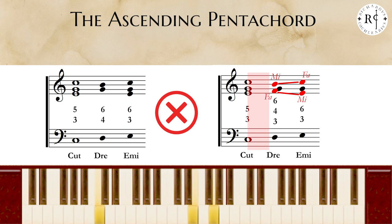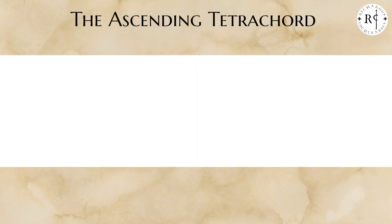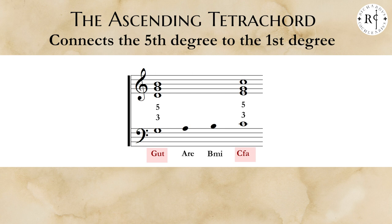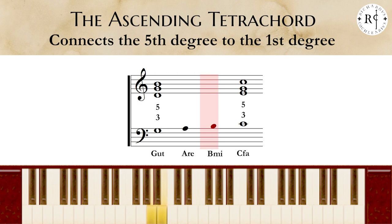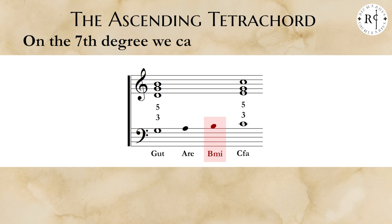The ascending tetrachord connects the fifth degree to the first one, from G ut to Si Fa. On G ut and Si Fa, we put a third and fifth chord, because they are the pillars. Also in this case, on Mi we must put a sixth, according to the previous rule. But on the seventh degree, it is also possible to add the diminished fifth — that is the first chord of French musicians — creating the movement Fa-Mi against Mi-Fa.